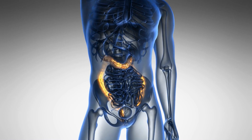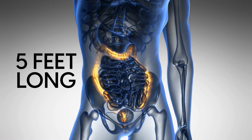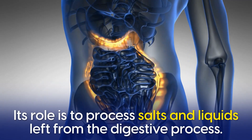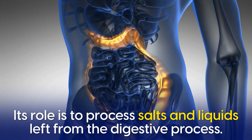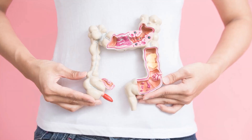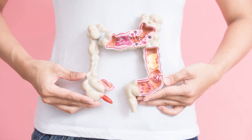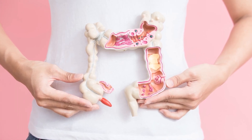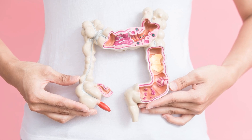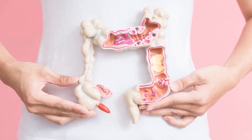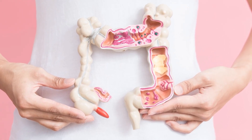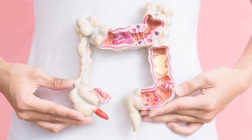The large intestine is about five feet long. It surrounds the small intestine, and its role is to process salts and liquids left from the digestive process. Most nutrients are already absorbed by the time food reaches the large intestine. However, things like fiber, water, dead cells, and bile are broken down further before exiting the body.